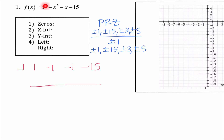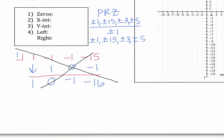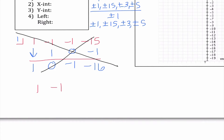I begin by starting with 1s and negative 1s because it makes it pretty easy. I'll bring down my 1: 1 times 1 is 1, I get 0; 0 times 1 is 0, I get negative 1; I get negative 16. Notice this number is not 0, so that means 1 is not a zero. My caution to you: it's really easy to make little mistakes when going through this because the math is pretty easy, so sometimes we rush through it.